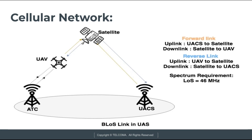The second link type is BLOS — beyond line of sight. In BLOS, the drone does not directly communicate with ATC and UACs; instead it communicates via satellite. If the drone is near ATC but not near UACs, communication is done via satellite. There are two processes: forward link and reverse link. In the forward link, uplink sends information from UACs to the satellite, and downlink sends information from the satellite to the UAV. In the reverse link, uplink sends information from the UAV to the satellite, and downlink sends information from the satellite to the UACs.